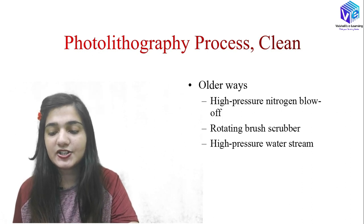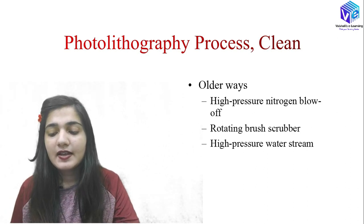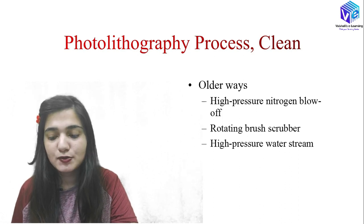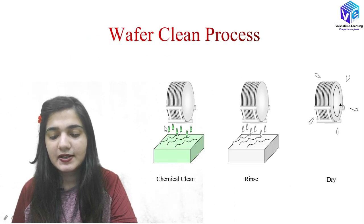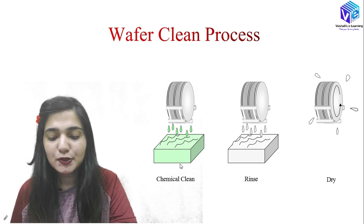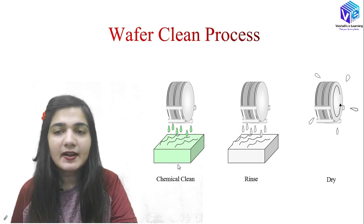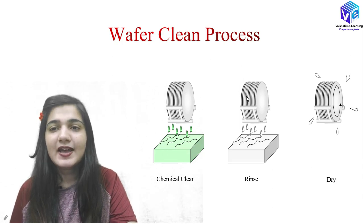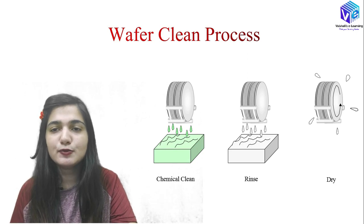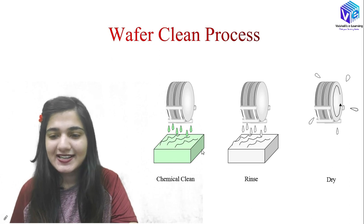HMDS vapor coating is done prior to the PR spin coating so that the PR spin coating will have more adhesion with the surface. It is usually performed in-situ with the pre-bake step in the track stepper integrated system. We also use chill plates to cool down the wafer before PR coating — after every baking process we use chill plates so the wafer is at room temperature for the next step. Temperature can affect PR viscosity.